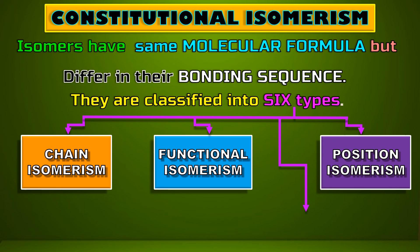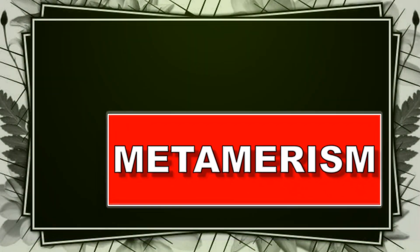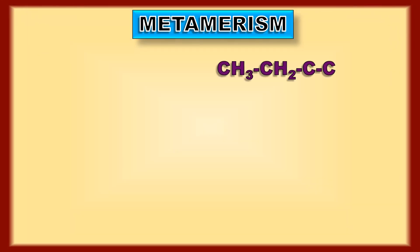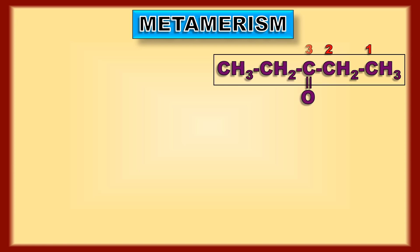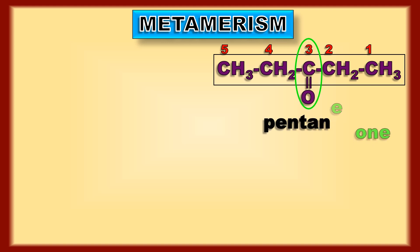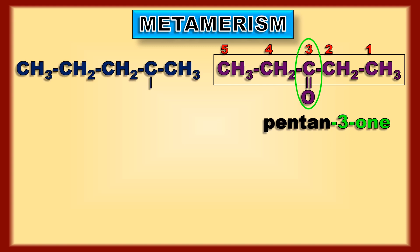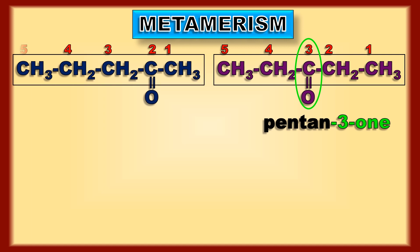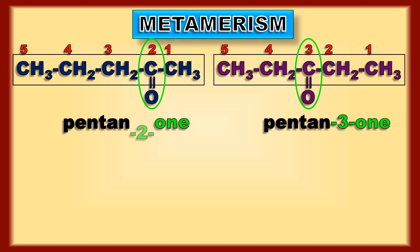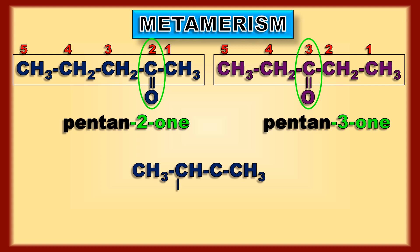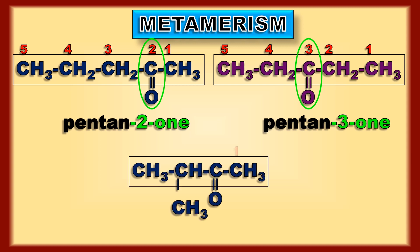This isomerism may be new to you — that is metamerism. Let us consider the following examples. The first is a ketone group at the third position of pentane, so pentan-3-one. The next example has the same ketone group at the second position, so it is pentan-2-one. In the third example it is a branched chain, on either side of the ketone group the nature of the alkyl group changes — here it is butan-2-one with a methyl group at the third position.